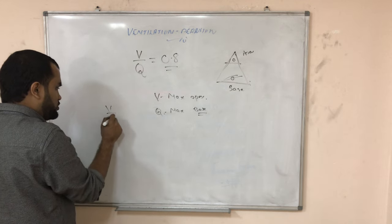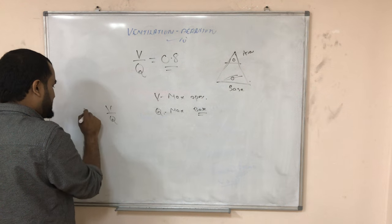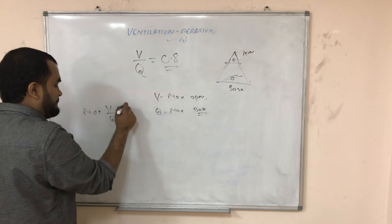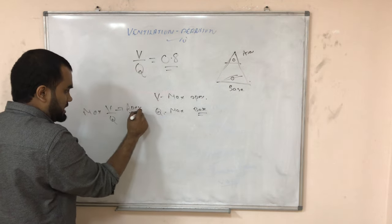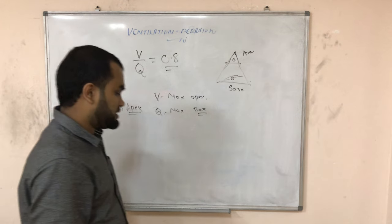But if you take the V by Q ratio, it is maximum at apex. Maximum V by Q ratio is at apex. MCQs are asked - maximum at apex.